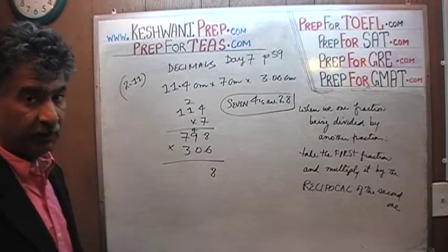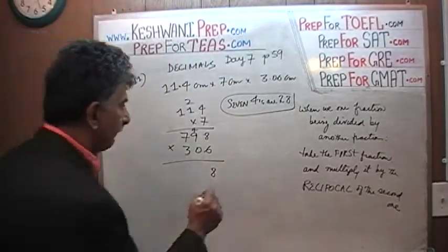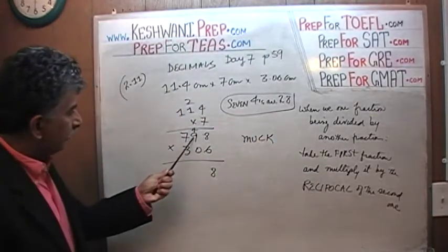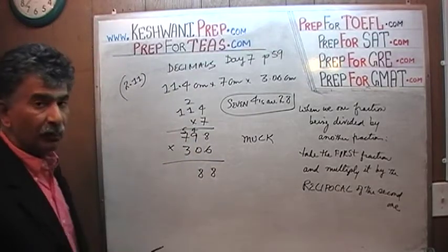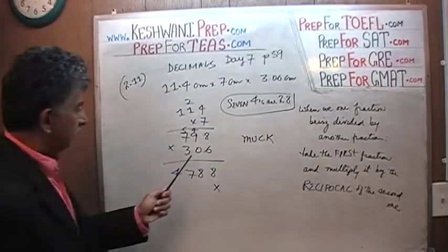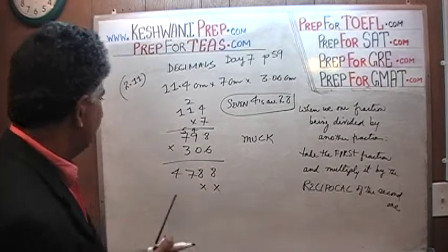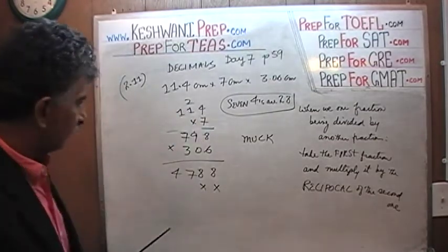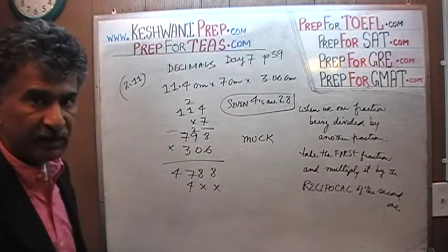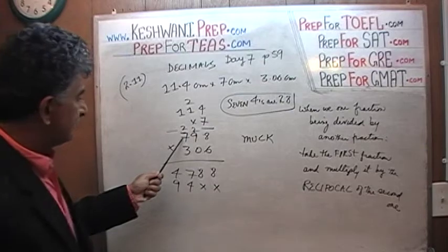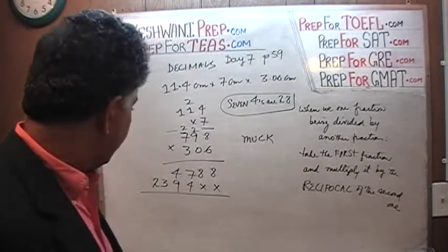Slow down otherwise you are going to muck it up. 9 times 6 is 54 plus 4 is 58 — write 8, carry 5. 7 times 6 is 42 plus 5 is 47. Next, multiply by 0 — no point wasting time, it's just going to be zero. Now multiply by 3: 8 threes are 24, carry 2. 9 threes are 27 plus 2 is 29, carry 2. 7 threes are 21 plus 2 is 23. I'm keeping my fingers crossed I didn't muck it up myself.